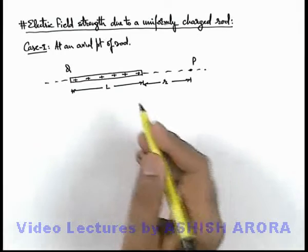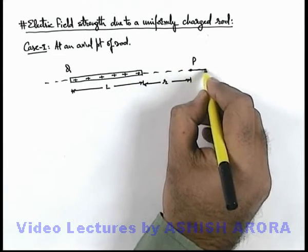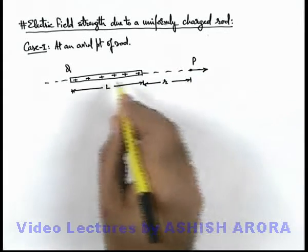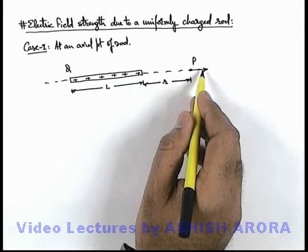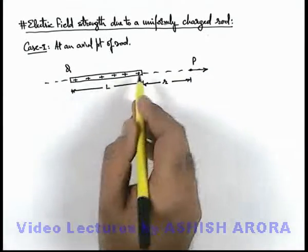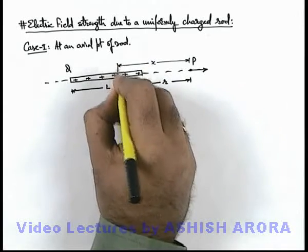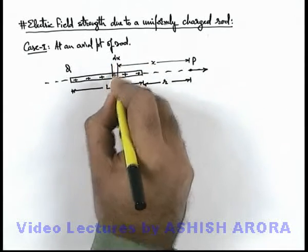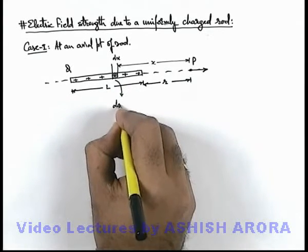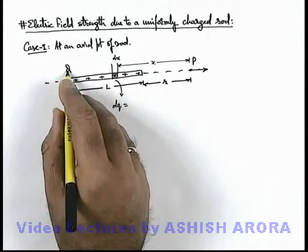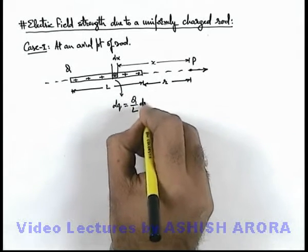In this situation, as the rod is positively charged, the electric field strength will be directed away from the positive charge. If we wish to find out the value of electric field strength, as it is a distributed charge, we'll consider a small element of length dx on the rod. On this element of length dx, the charge is dq, and as charge q is uniformly distributed on length l, it can be written as (q/l)dx.